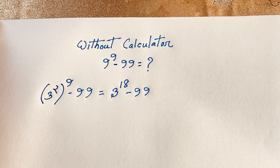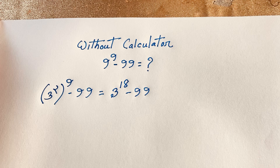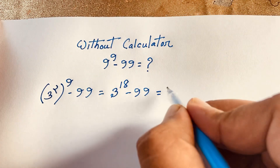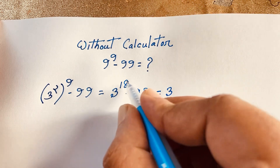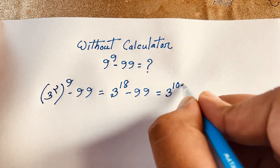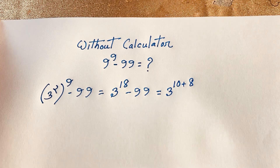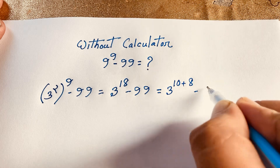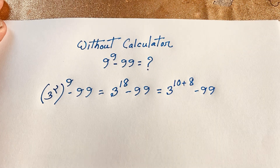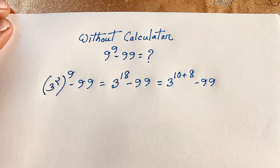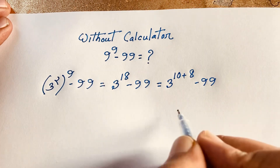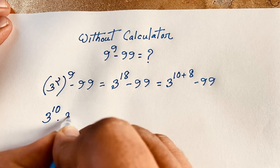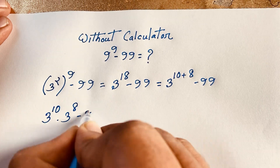I solved this question step by step without a calculator. Now here is 3 to the power 18, and 18 equals 10 plus 8, so according to exponential laws, 3 to the power 18 equals 3 to the power 10 times 3 to the power 8, minus 99.